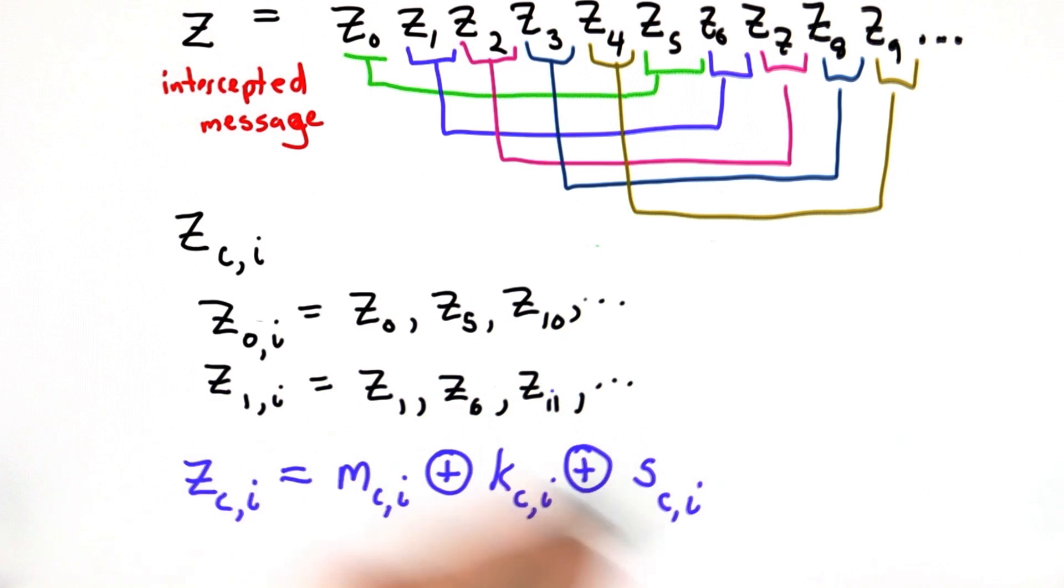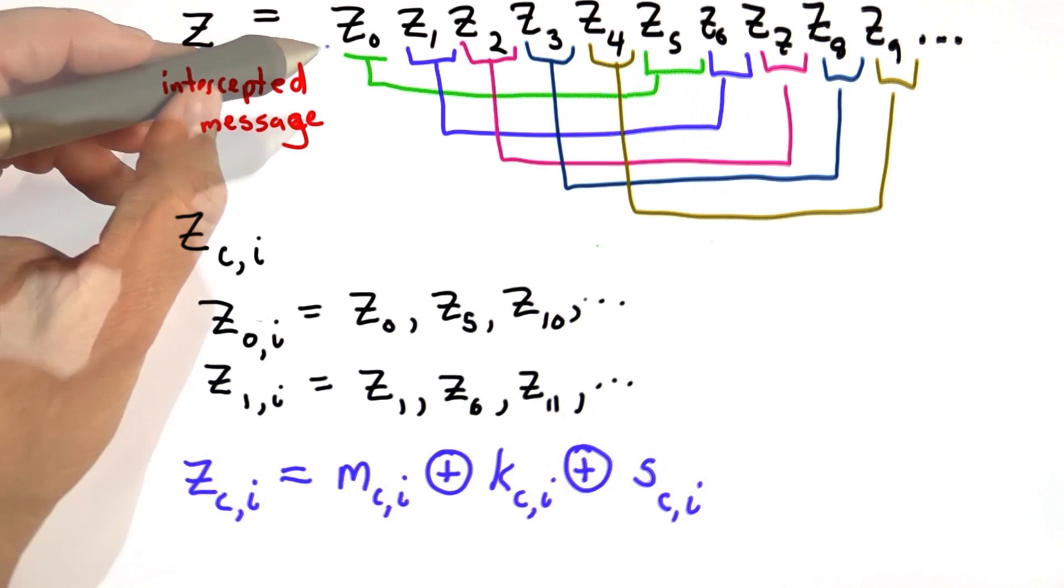By separating it into those three pieces, we're going to be able to take advantage of properties that they have. The key insight is that the s wheels don't always turn. If you look at subsequent characters, there's a good chance that the s wheels have not changed.